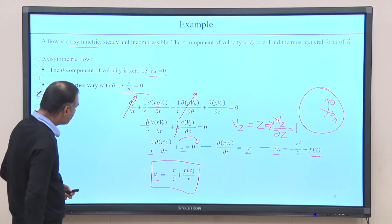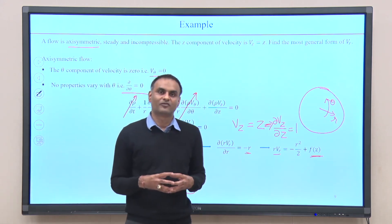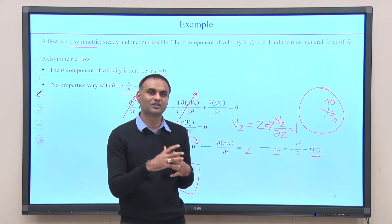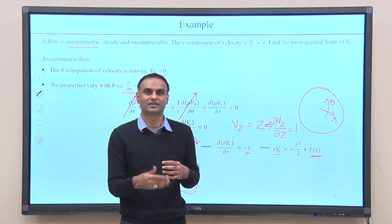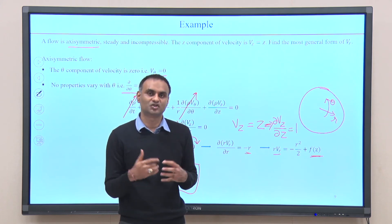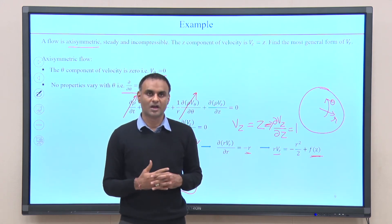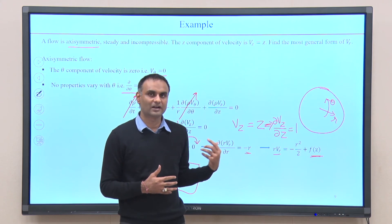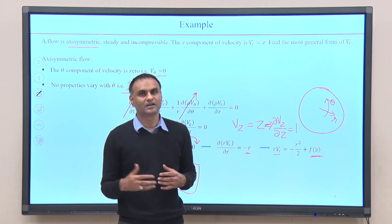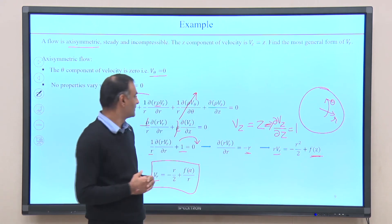In this lecture we saw properties of cylindrical coordinate unit vectors: the derivatives of e_r and e_theta with respect to theta are non-zero, while all other unit vector derivatives are zero. We used these to find del dot v and expand the continuity equation in cylindrical coordinates, which we will use to solve problems.